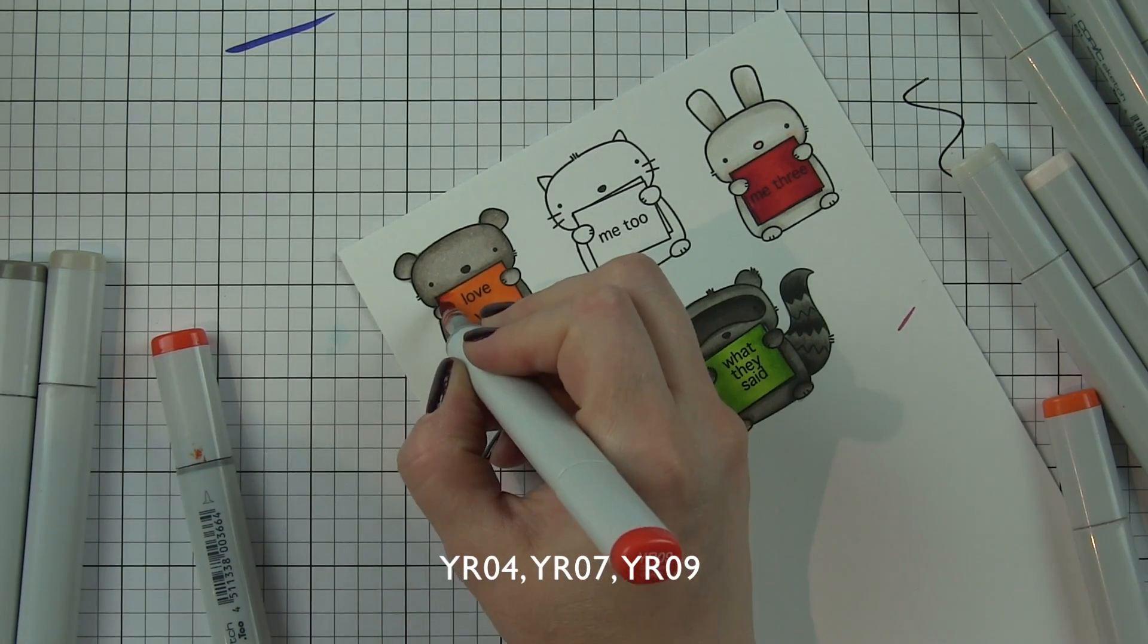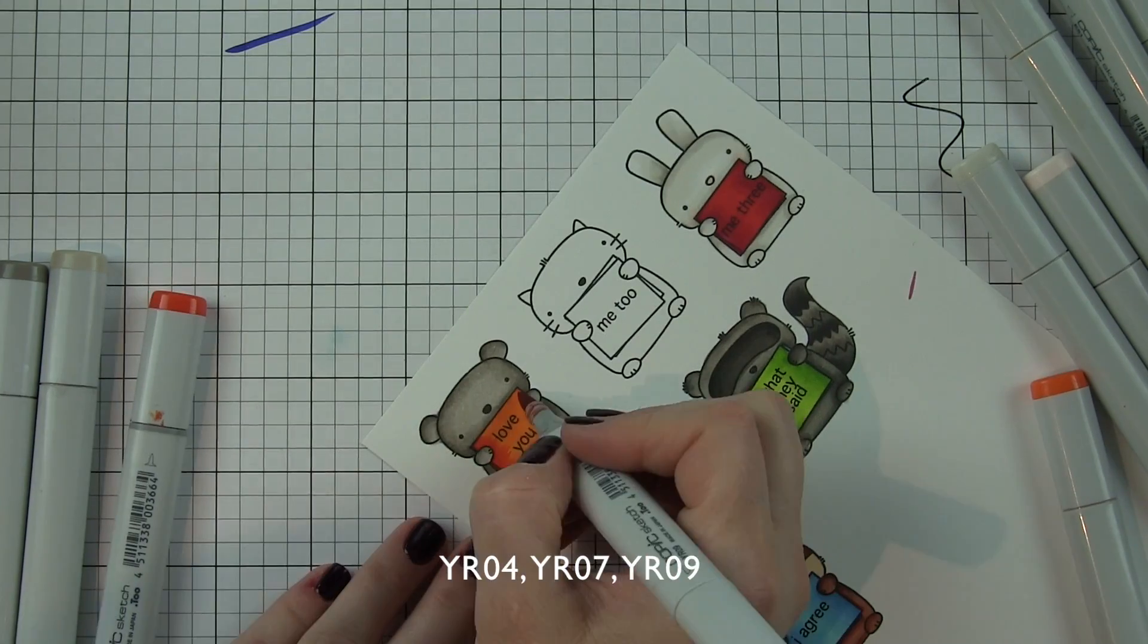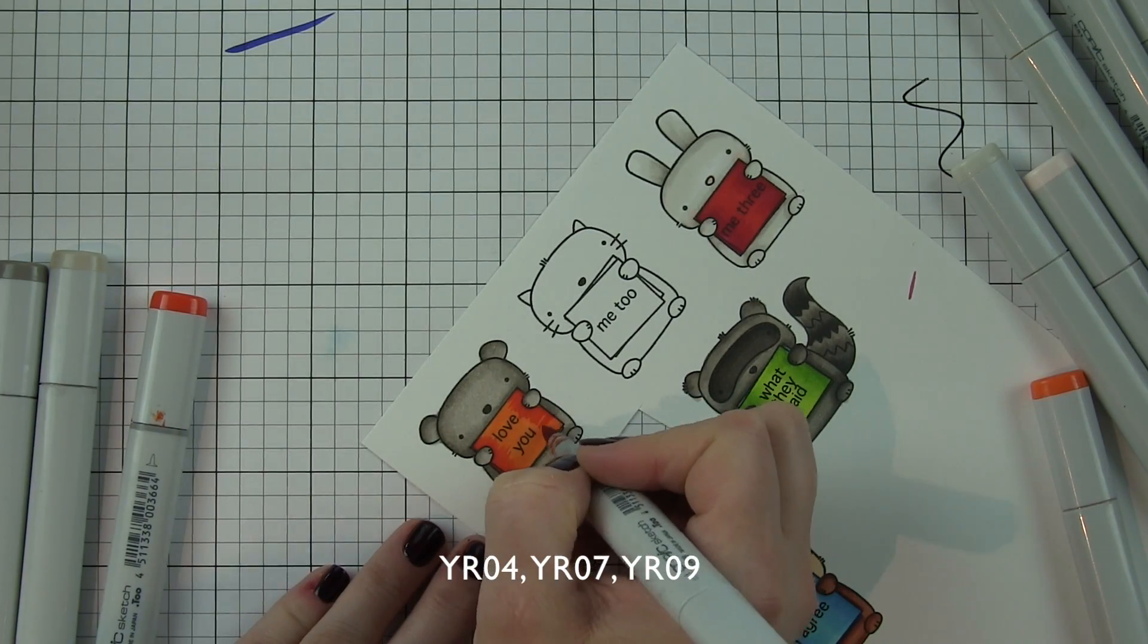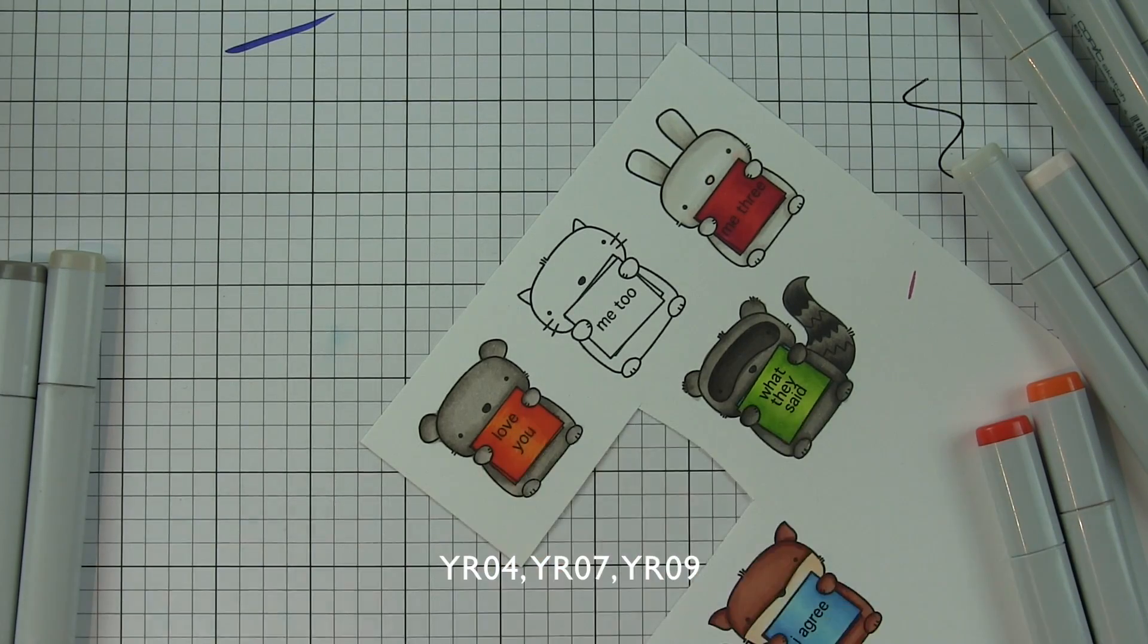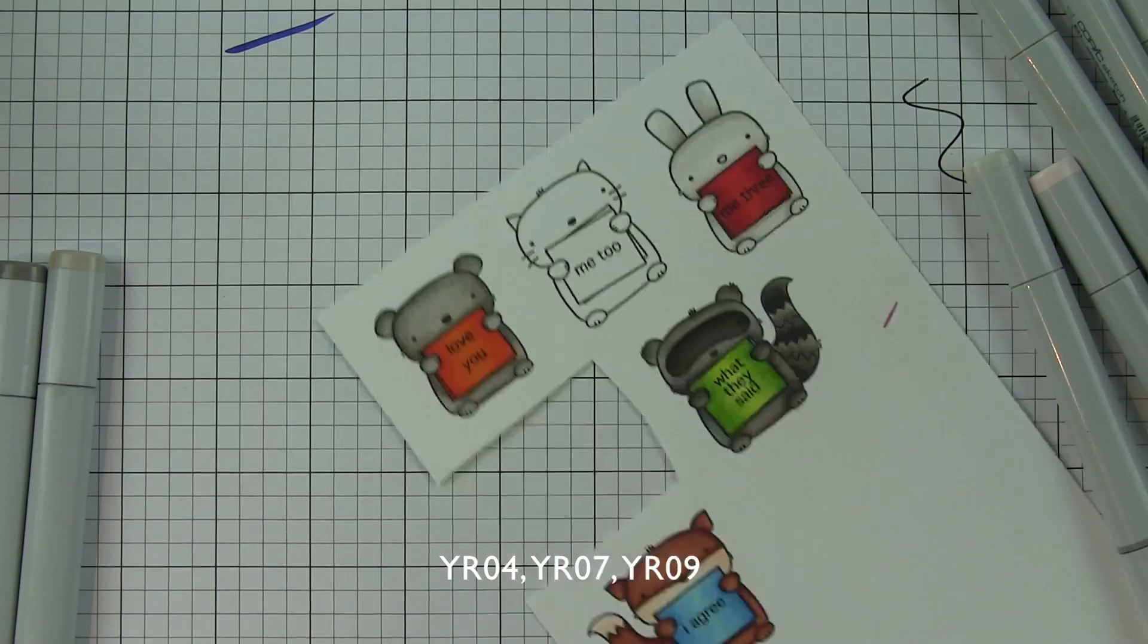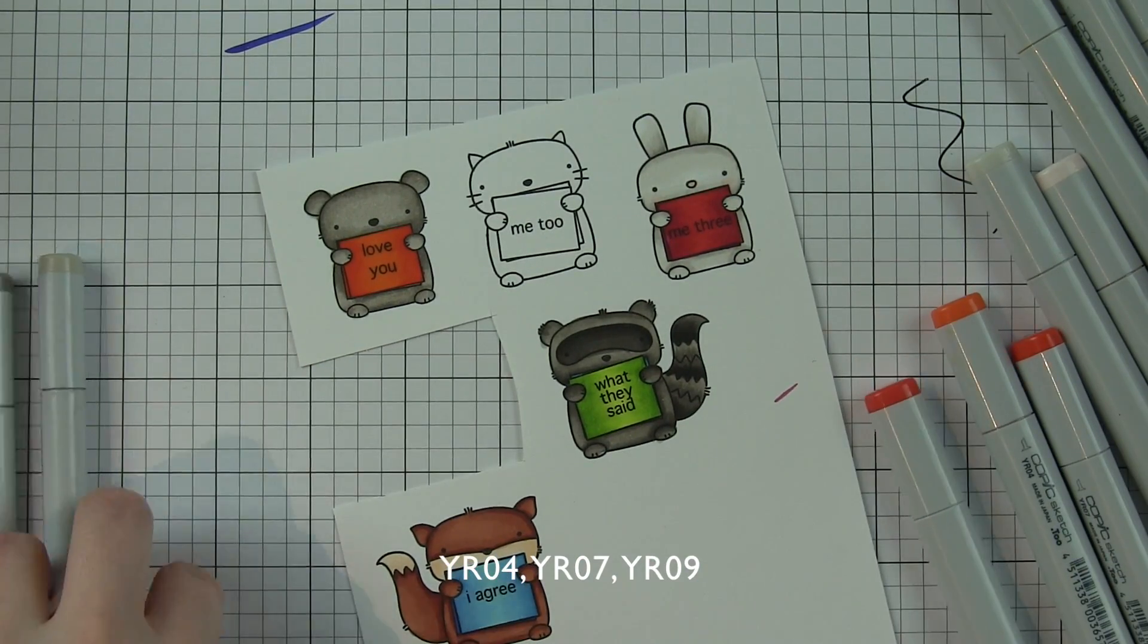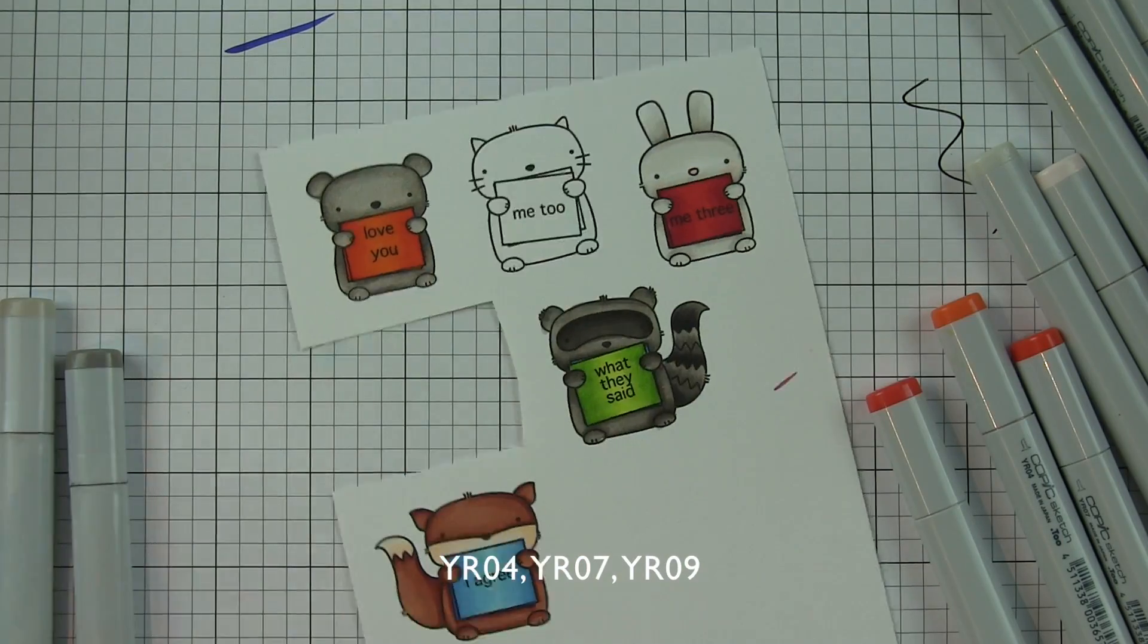The mouse is holding an orange sign created with YR04, seven and nine. I love this little mouse - he's so cute. I really do not like mice at all except in images and coloring them for cards.